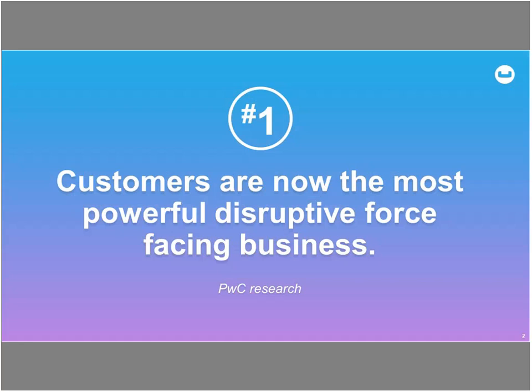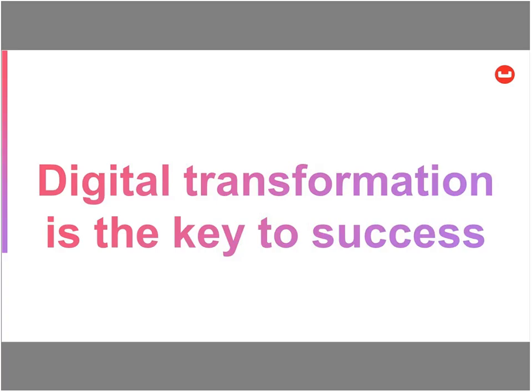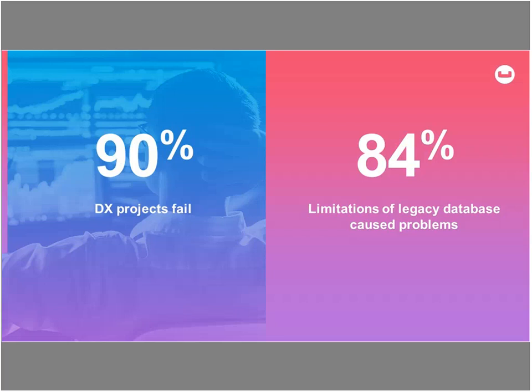Customers are now the most powerful disruptive force facing business. About 52% of the S&P 500 have disappeared in the last 15 years — that's a lot of churn. The reason is because of customers — not pricing, not products or competition. It's about how customers are influencing other customers. It's all driven by digital transformation, but 90% of those digital transformation projects fail because they're not meeting the business case that justified the project. Behind that failure rate sits the problem of what happens to the data that underpins everything.